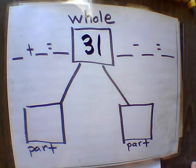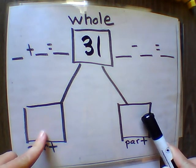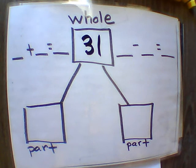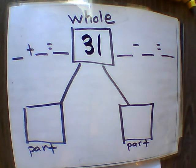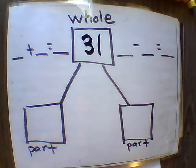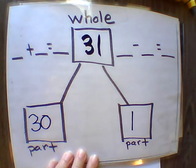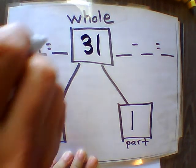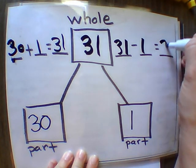Now we're moving on to our part-part-whole. I want you to break it down into tens and ones for extra practice with double-digit adding. Break 31 into the group of tens and then the ones. So 31 would be broken down into 30 and 1. Then we write 30 plus 1 equals 31, and 31 minus 1 equals 30.